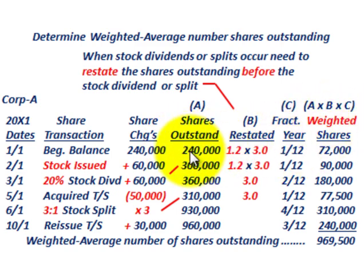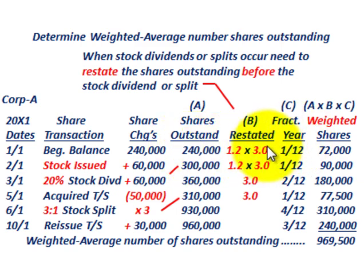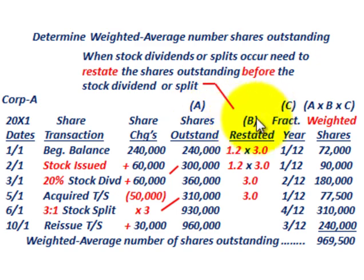For the weighted average shares, you take shares outstanding times the restatement factor times the fraction of the year. For the first period — January 1st to February 1st — that's 240,000 times 1.2 times 3 times 1/12, giving weighted shares of 72,000. You proceed through each period the same way and sum all the weighted shares. The total for the year comes to 969,500 shares — that's the weighted average number of shares outstanding.